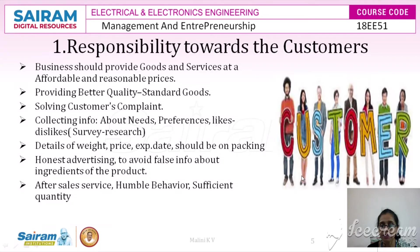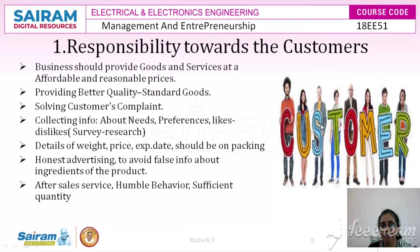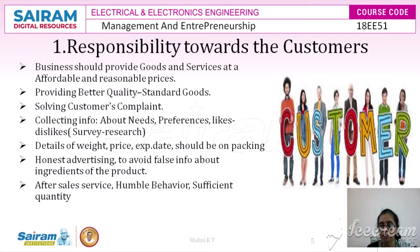Let us treat each stakeholder separately, starting with the customer. The customer is the king. The social responsibility towards customers means the business should provide goods and services at an affordable and reasonable price so customers return to buy again. The business should also provide goods of standard quality — there should not be any inferior quality product released that could harm the surrounding environment.